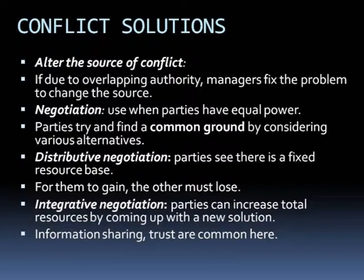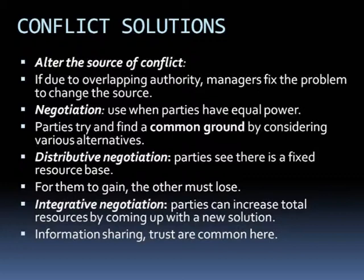These are the ways managers resolve conflicts — tackling them individually and going back to the sources of conflict. To reach solutions acceptable to everybody, the first approach is to alter the source of conflict: if due to overlapping authority, managers fix the problem by changing the source. Negotiation is used when parties have equal power — parties try to find common ground by considering various alternatives. Distributive negotiation is when parties see a fixed resource base, so for one to gain the other must lose. Integrative negotiation is when parties can increase total resources by coming up with a new solution, with information sharing and trust being common here.